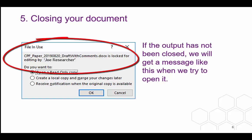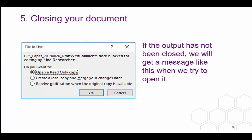Being locked for editing means that you could potentially make a change between the first and second SDC check. This would render the first check invalid and the whole process would have to begin again, wasting resources and causing delay. If we find an output is locked for editing, we won't check it until it has been unlocked.